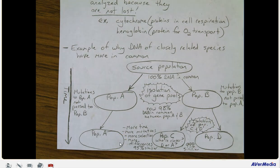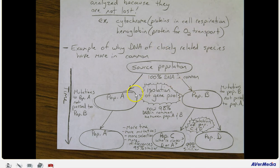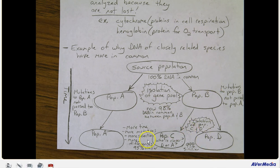A source population starts 100% in common. When it splits, mutations not shared make them about 98% in common. If that population splits again, the two newer populations will be more closely related to each other — more DNA in common — than to the original population A.